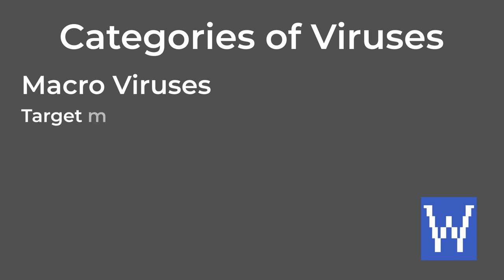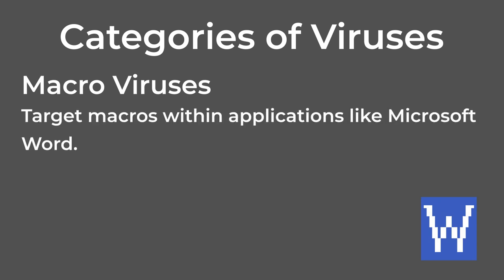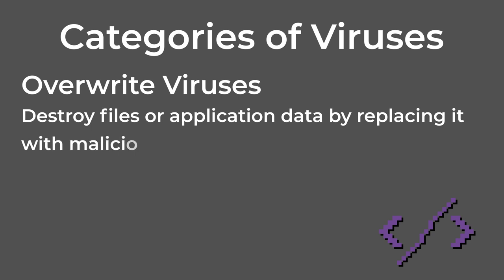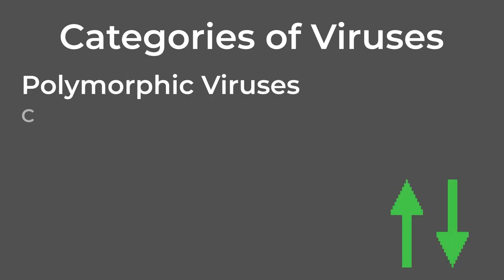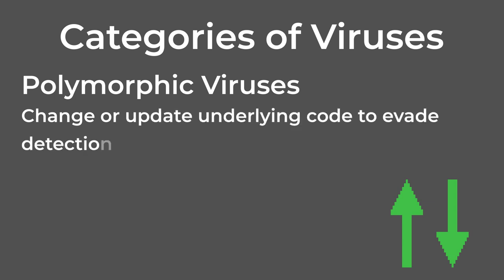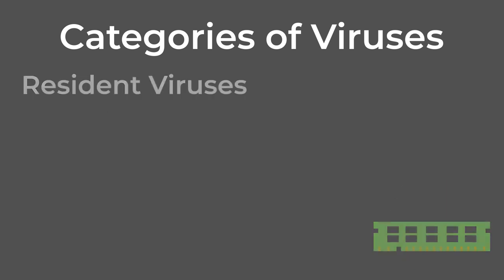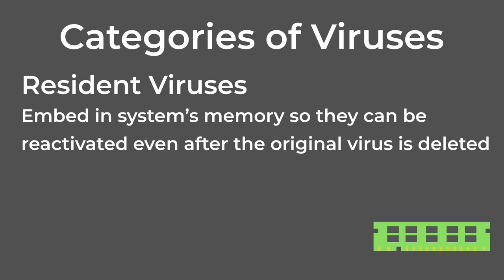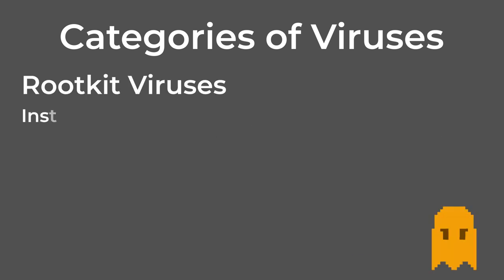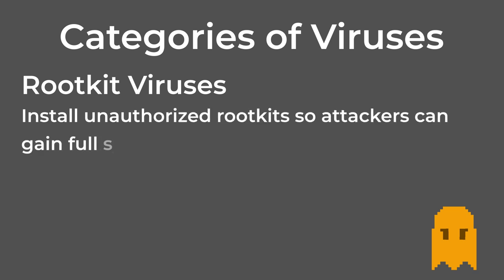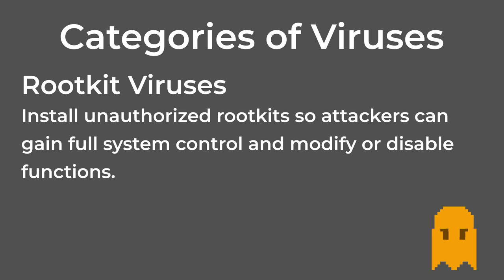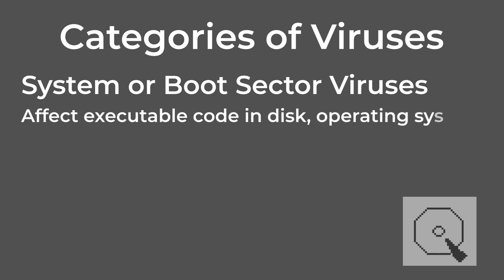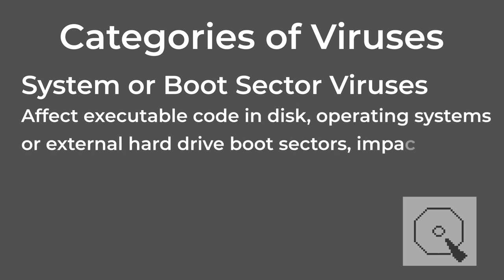The main categories of viruses are: File infectors, which attach themselves to program files, activating when the user runs the program. Macroviruses, which target macros within applications like Microsoft Word. Overwrite viruses, which destroy files or application data by replacing it with malicious code. Polymorphic viruses, which change or update underlying code to evade detection, making them harder to identify. Resident viruses, which embed in systems' memory so they can be reactivated even after the original virus is deleted. Rootkit viruses, which install unauthorized rootkits so attackers can gain full system control and modify or disable functions. System or boot sector viruses, which affect executable code in disks, operating systems, or external hard drive boot sectors, impacting startup.